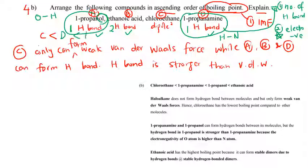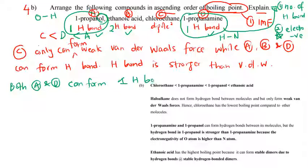Therefore, 1-propanamine D comes before 1-propanol A in the ascending order of boiling point. Both A and D can form one hydrogen bond; however, 1-propanol has a stronger hydrogen bond compared to 1-propanamine because nitrogen is less electronegative than oxygen.